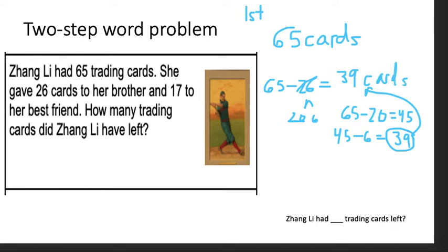She is not done. Zhang Lee not only gave 26 cards to her brother, but she gave 17 to her best friend. What operation am I going to use now? Subtraction again. So she had 39 cards left, and she gave 17 away, so we have to subtract that.